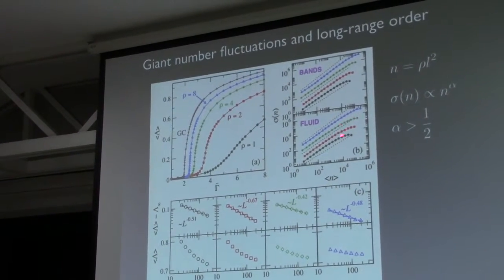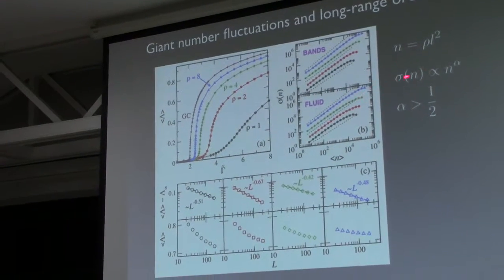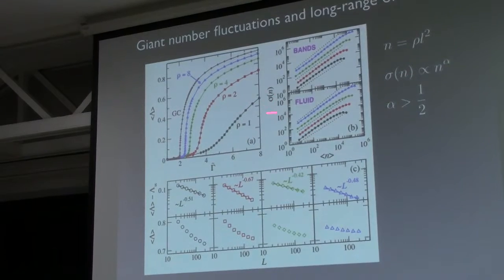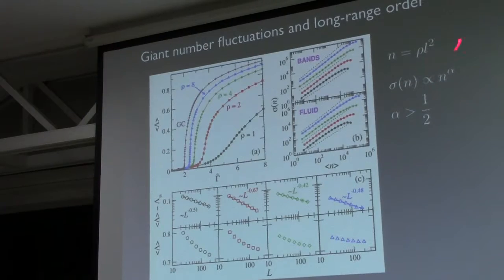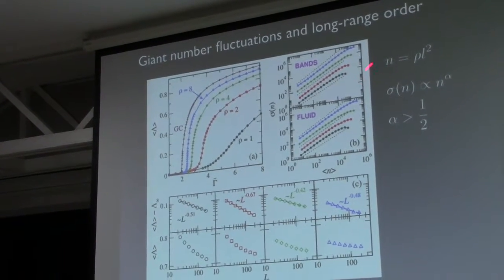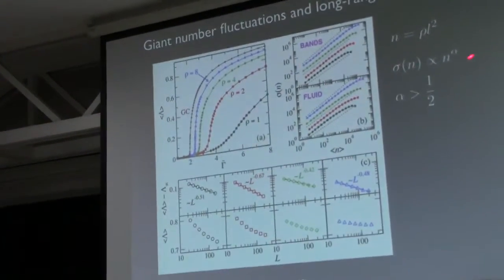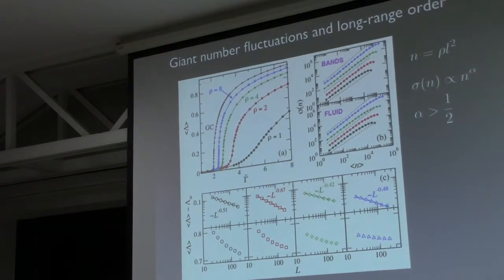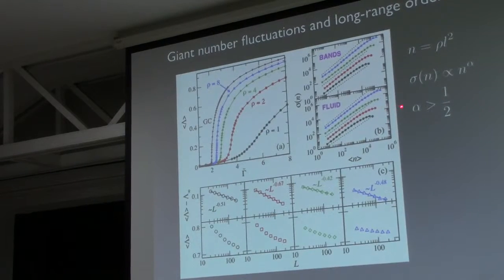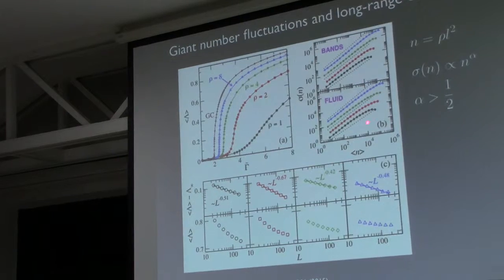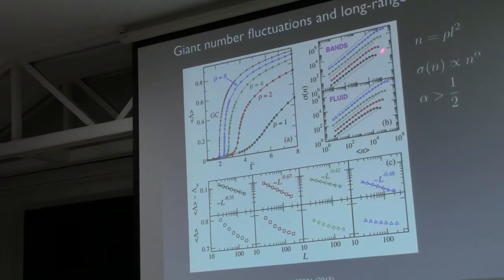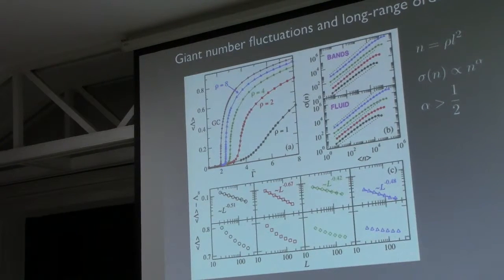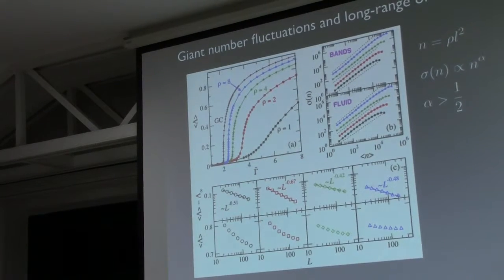One thing we get different from the Vicsek model is the variance of the fluctuations in density. It goes proportional to n to the alpha. In the banded region for the Vicsek model, this exponent is one, and in the fluid phase that exponent is around 0.8. In our states it's around 0.9, so we don't yet have an explanation for that. We don't also see trains of bands traveling - we just see one band in the banded phase.